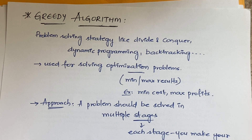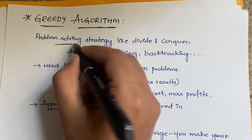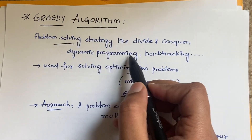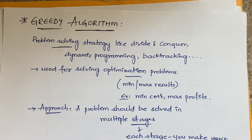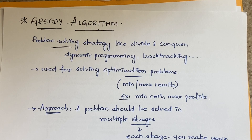So what is a greedy algorithm? It is a problem-solving strategy, same as divide and conquer, dynamic programming, backtracking, and branch and bound. In divide and conquer, you divide the problem into sub-parts, solve each sub-part, and combine all the solutions. In backtracking, you go backwards. In the greedy algorithm, we'll see exactly what we do.